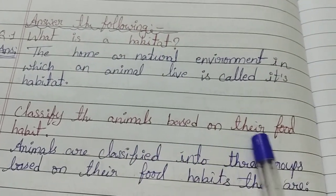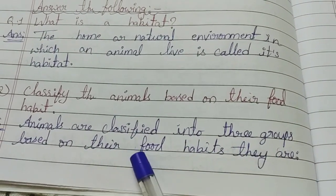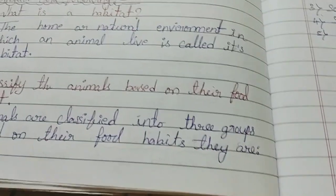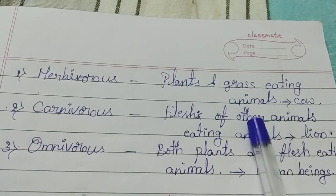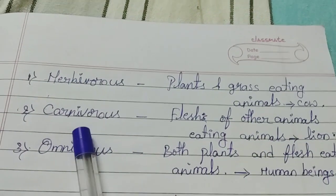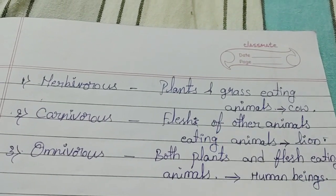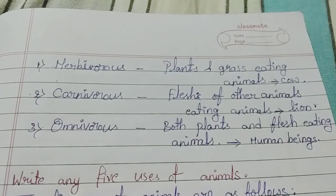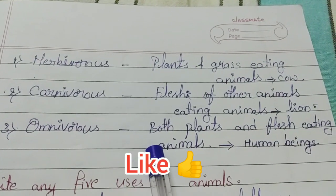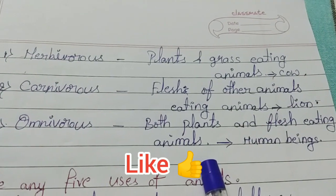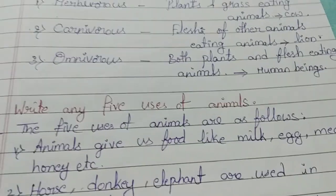Classify the animals based on their food habit. Animals are classified into three groups based on their food habits. They are: herbivorous animals — plants and grass-eating animals, for example cow and goat; carnivorous animals — animals that eat the flesh of other animals, for example lion and tiger; omnivorous animals — both plants and flesh-eating animals, for example human beings, cats, and dogs.